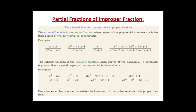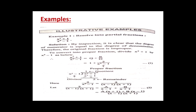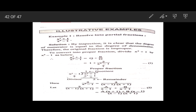Now if the fraction is improper, how do we resolve it into partial fractions? The example question is: resolve into partial fractions x² + 1 upon x² - 1. This is not a proper fraction — it is an improper fraction. Why? Because the highest degree of x in the numerator and the highest degree of x in the denominator are both the same: x² in the numerator and x² in the denominator, both giving degree 2. Therefore numerator degree equals denominator degree, and hence it is an improper fraction.